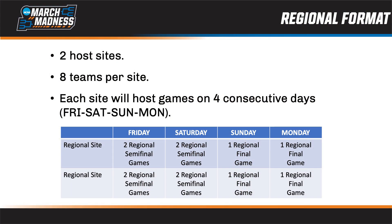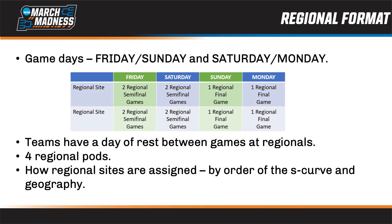So, how does the two-site regional format work? The regionals will take place at two sites across the country, with each site hosting eight teams. Each site will host four consecutive game days, starting on Friday through Monday on the regional weekend. Teams assigned to each site will play either in a Friday regional semifinal and advance to a Sunday regional final, or will play in a Saturday regional semifinal and advance to a Monday regional final. Teams will have a day of rest between the regional semifinals and the regional finals.